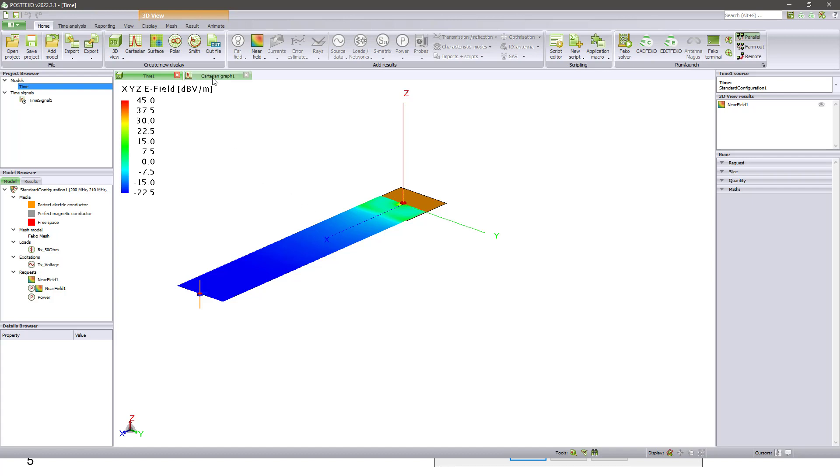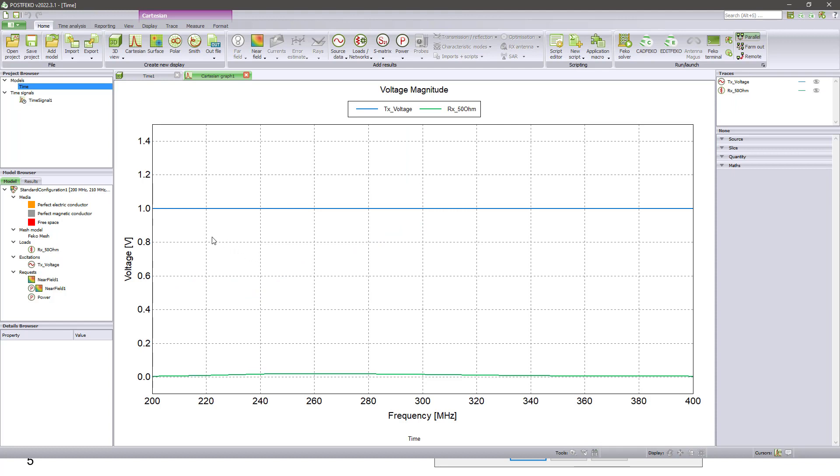In frequency domain, also you can see input voltage applied to monopole antenna. And then you can see the output voltage at dipole antenna as a receiver.